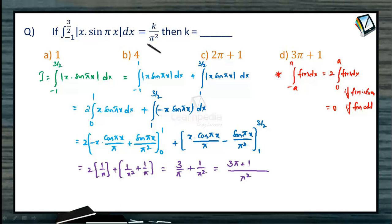Now when we compare this with the right hand side of the given expression what is the value of k coming to be? The value of k which is there in the numerator is 3 pi plus 1 which is present in option d.